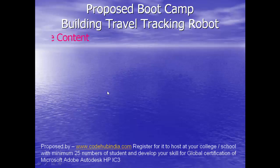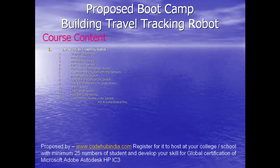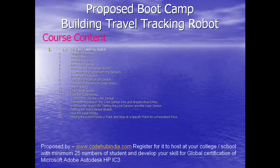The Introduction to the Traveling Robot chapter covers: chapter objectives, introduction, materials required, line sensor overview, how a line sensor works, assembling the robot with sensors, the Lines and Search sketch, using the Lines and Search sketch, how the code works, line tracking, line tracker sketch, learning to use the color sensor, connections between color sensor pins and Arduino board pins, and testing the line sensor and color sensor sketches.